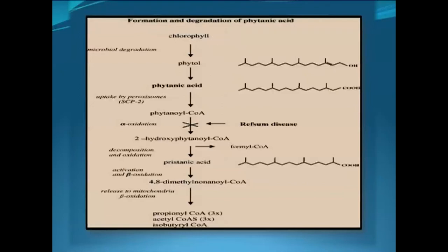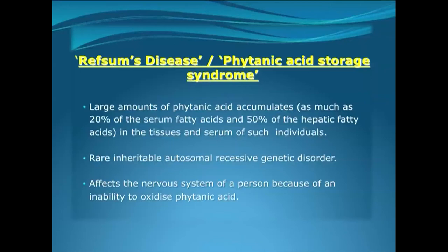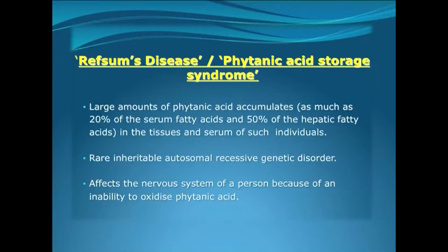As shown in this slide, chlorophyll which we intake from plant sources contains phytol residues. From phytol, we get phytanic acid through oxidation of phytol. After being taken up by the peroxisomes, phytanic acid is converted to phytanoyl-CoA. This phytanoyl-CoA undergoes alpha oxidation to produce 2-hydroxyphytanoyl-CoA, which ultimately converts to phytenic acid, and this phytenic acid generates propionyl-CoA, acetyl-CoA, and isobutyryl-CoA. Coming to Refsum's disease or phytanic acid storage syndrome, this takes place because of the deficiency of the enzyme phytanoate alpha-hydroxylase, resulting in reduced alpha-hydroxylation of phytanic acid and its accumulation.